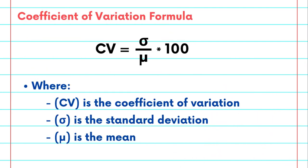The formula for the Coefficient of Variation is as follows: CV equals sigma divided by mu times 100. This is where CV is the Coefficient of Variation, sigma is the standard deviation, and mu is the mean.